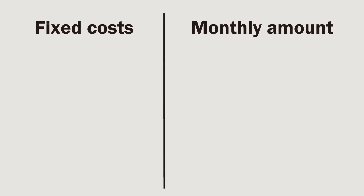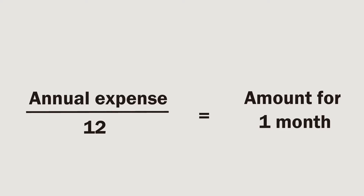The first step in putting together your trucking expenses spreadsheet is determining your fixed costs from the last month. Fixed costs are expenses that remain the same month over month, regardless of how many miles you drive, how much you work, or how many loads you haul. If you have any annual expenses, these are most likely fixed costs — take the total annual expense, divide it by 12, and add that amount to your fixed cost column.